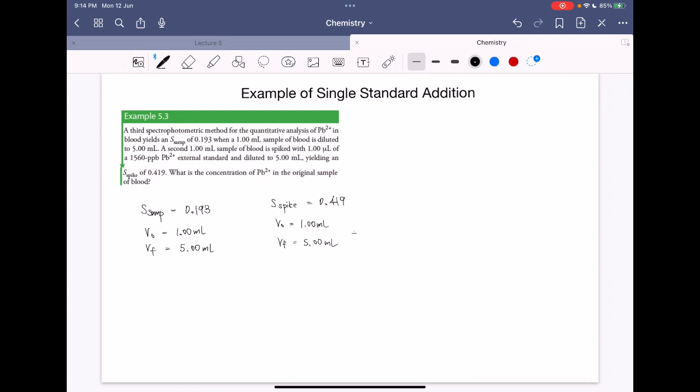But we have an addition of spike. VSTD is 1.0 microliter and the concentration of the standard is 1560 ppb.